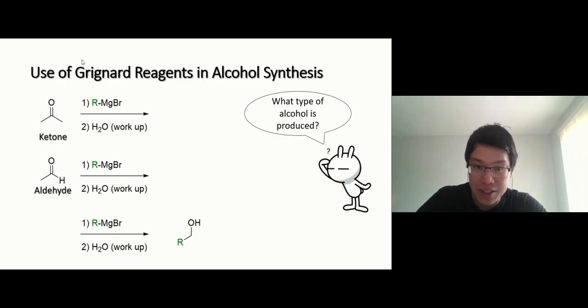I'm going to have you guess what type of alcohol each Grignard reaction will produce. If you look at the mechanism, the first one, let's start with ketone. So this carbonyl carbon already has two methyl groups on it.